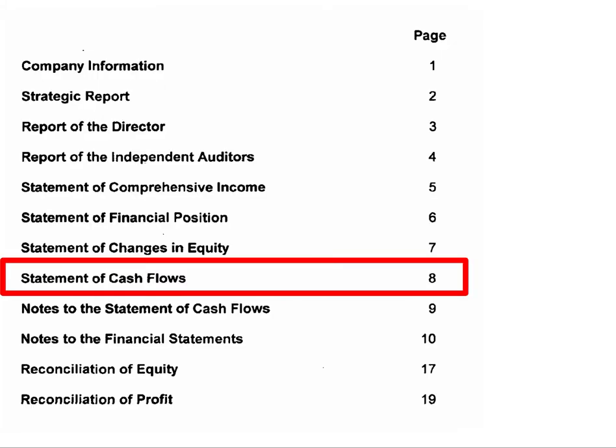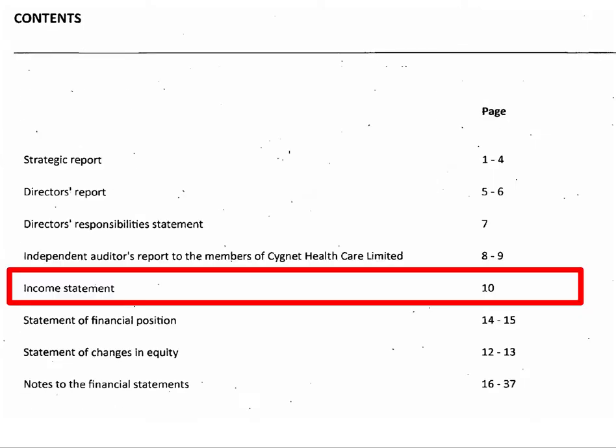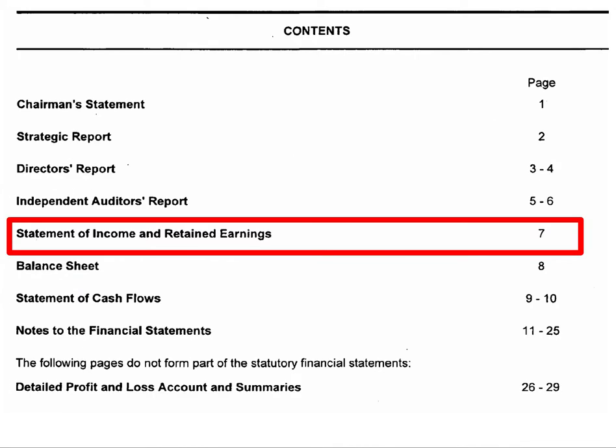The cash flow statement is sometimes called different things, but you can normally find it in the contents page of a set of company accounts with a name like 'statement of cash flows', 'income statement', or 'statement of income and retained earnings'. But as I said, it's probably going to be the first set of numbers you come across if you scroll past all the text.